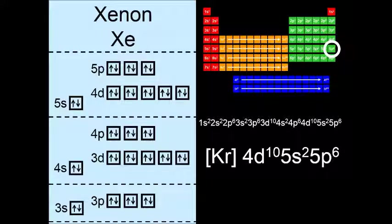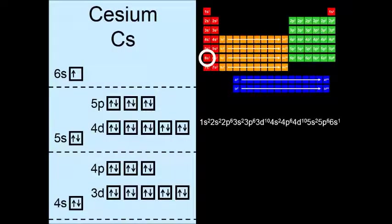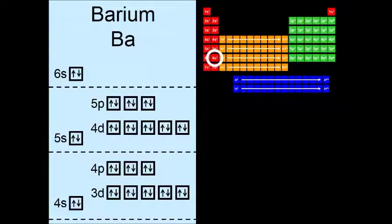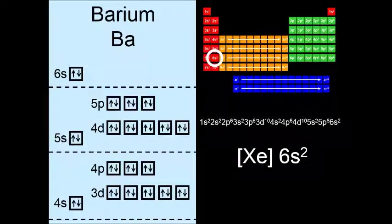So only two more elements to talk about. And that would be going around the corner to element number 55 in period 6, cesium. So it's going to end with 6s1. It's got everything that xenon has, plus one more electron on the 6s orbital. And then finally, barium, which will end with 6s2.